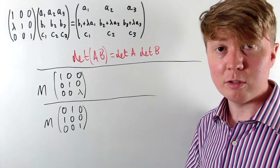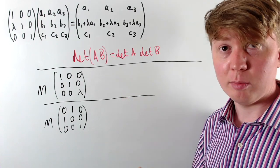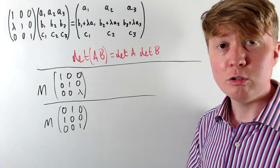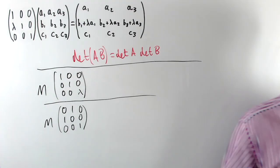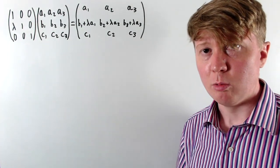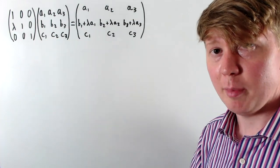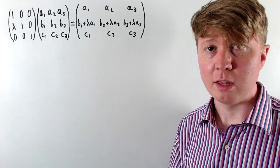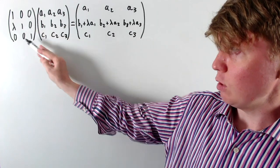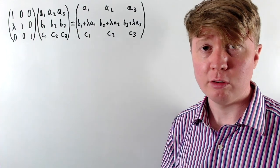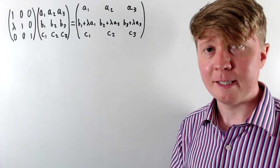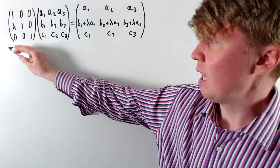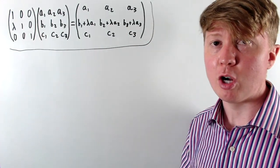Now we'll finish by looking at a more geometric way of understanding these properties. We can think of our matrix as a linear transformation, and the determinant as a volume scale factor — or in 2D, an area scale factor. For the elementary row operation of adding a multiple of one row to another, we'll look at a simpler 2D example to understand the geometric picture.